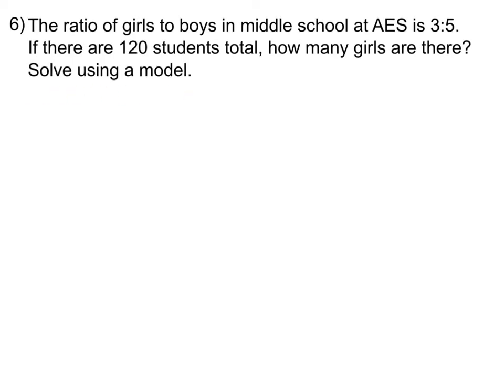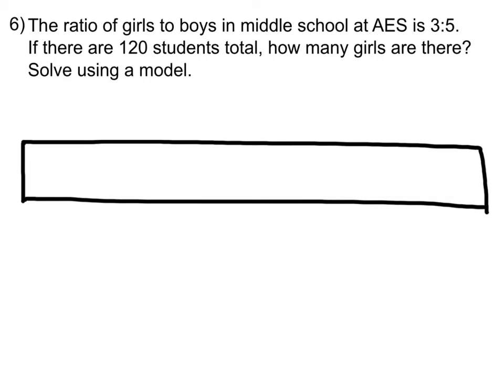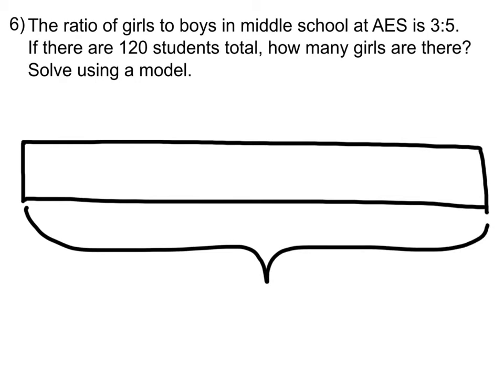So first what I did was draw a tape diagram. Then after making the tape diagram, I made a bracket here and wrote 120 equals 8. This indicates the entire thing. So the entire tape diagram represents 120 students, which is also equal to 8. The reason I wrote 8 is because the ratio is 3 to 5, so the total number of parts is 3 plus 5, which is 8. Then I divided the tape diagram into 8 parts.